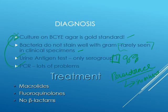Treatment with this one is pretty tricky. We're looking at macrolides — azithromycin and clarithromycin are an option. Fluoroquinolones, specifically levofloxacin, tend to be the preferred option. Beta-lactams you're going to avoid — you can't really use them, because there are high amounts of beta-lactamases present in the cell wall of L. pneumophila, making them ineffective against this organism.